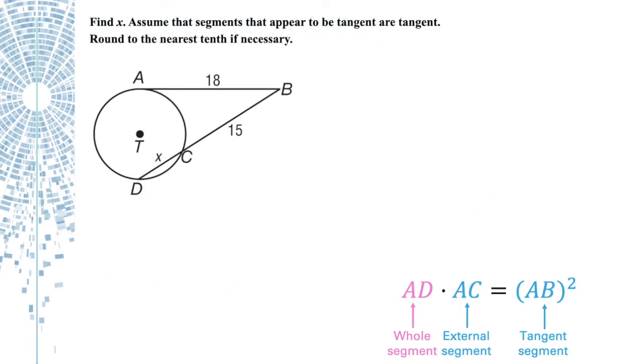So we'll try this out. We've got 18 squared, that's the tangent segment, equals 15, that's the external segment, times 15 plus X, the whole segment. So 324 equals 225 plus 15X, solve for X, and we get 6.6.